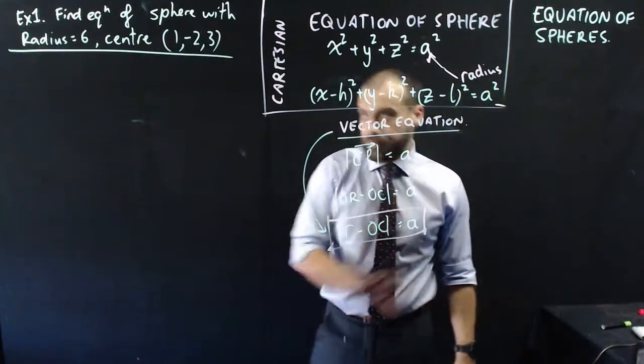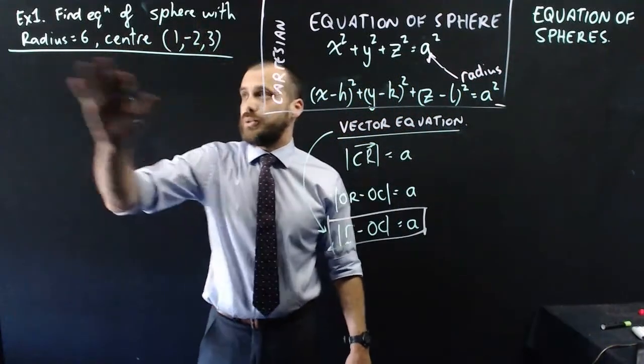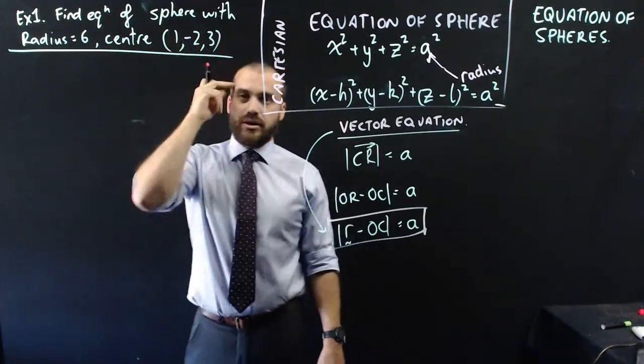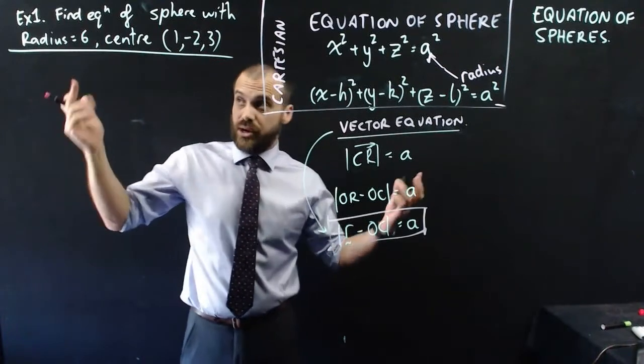So kick off with something really simple here. Find the equation of a sphere with radius 6, center (1, -2, 3). The question doesn't say Cartesian or vector equation, so let's do both.